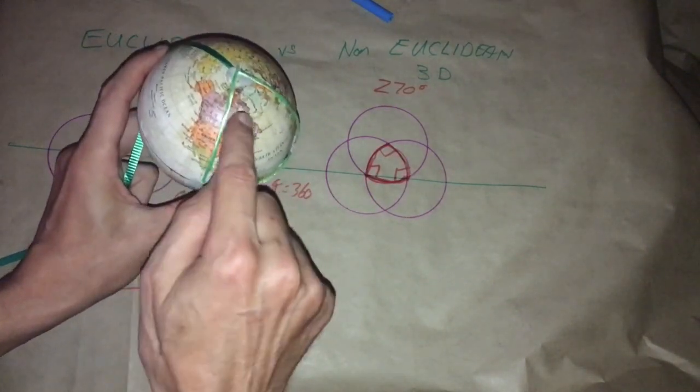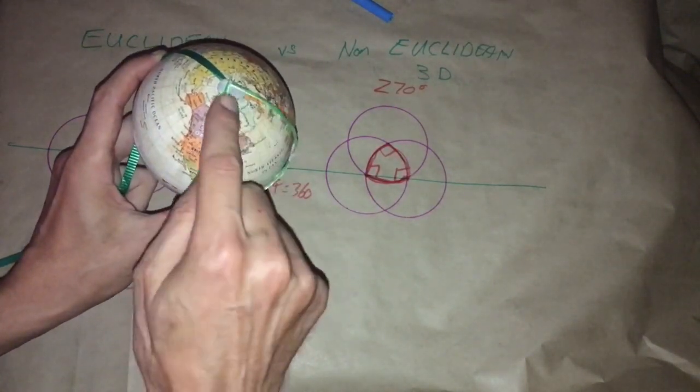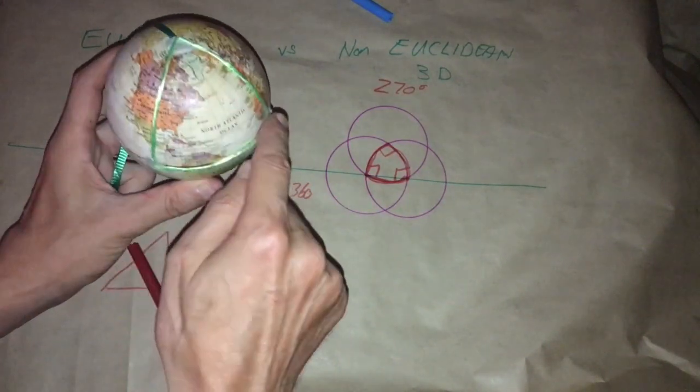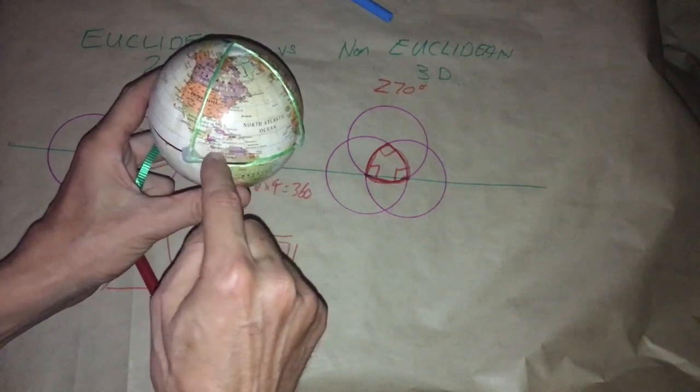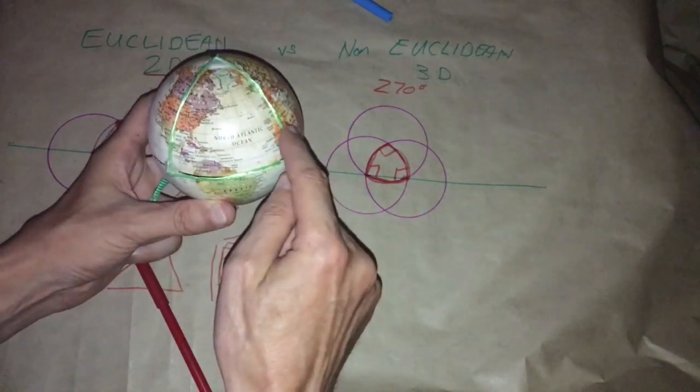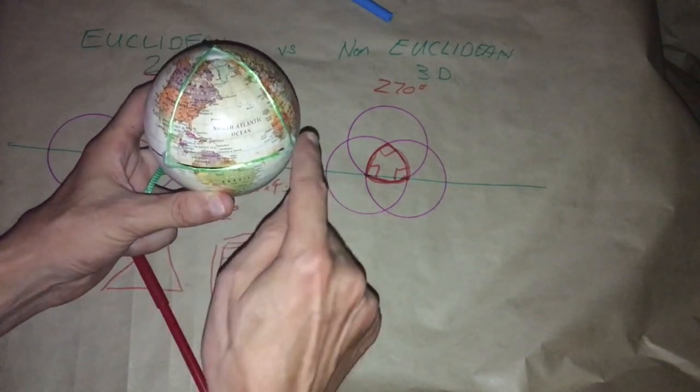And at the North Pole you turn 90 degrees again to your right, and now we're heading south and we get back to our origin point. 90 degrees, 90 degrees, and 90 degrees to close the triangle.